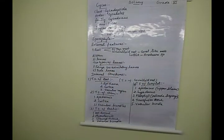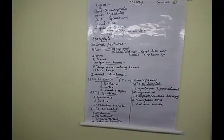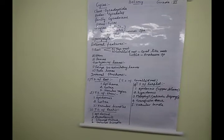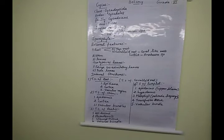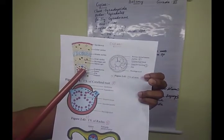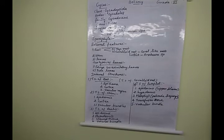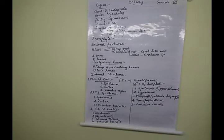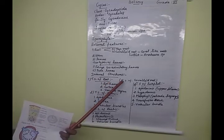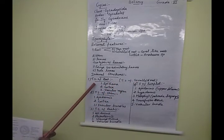Opposite to exarch is endarch condition. In endarch condition, the protoxylem is towards the center and the metaxylem is towards the periphery. Xylem consists of two types: protoxylem, the first-formed element, and metaxylem, the later-formed element. These are the internal structures of the TS of the coralloid root or normal root.